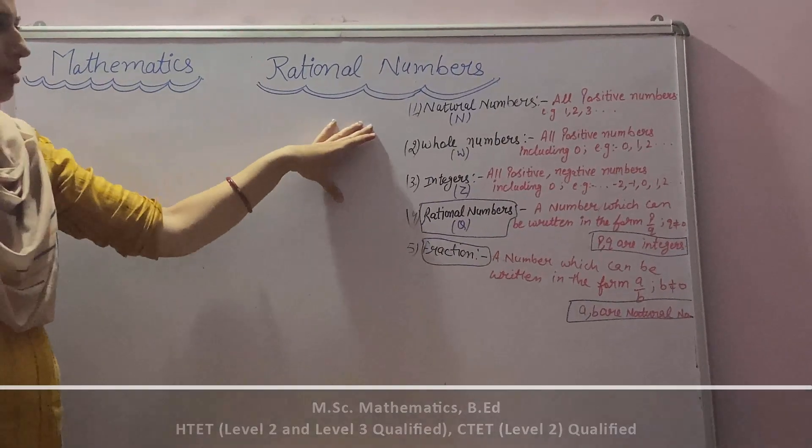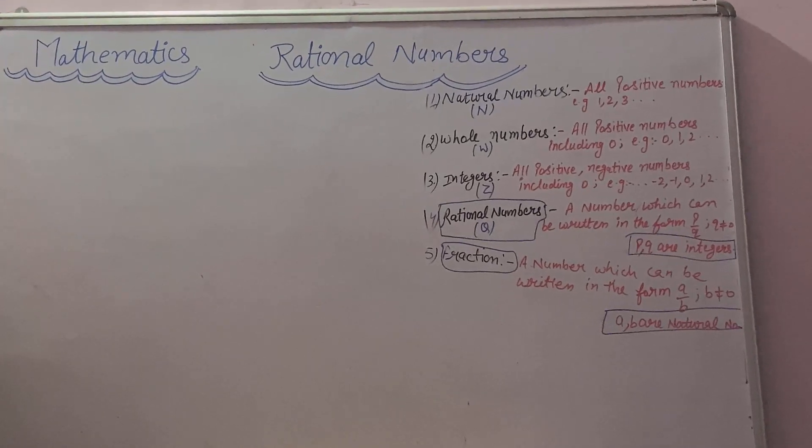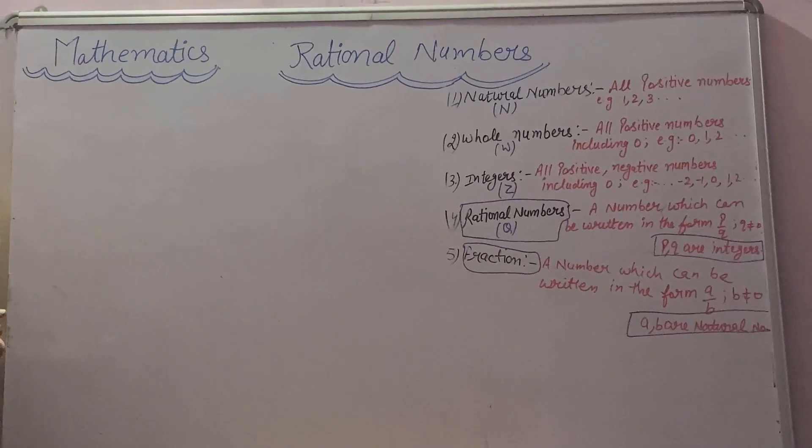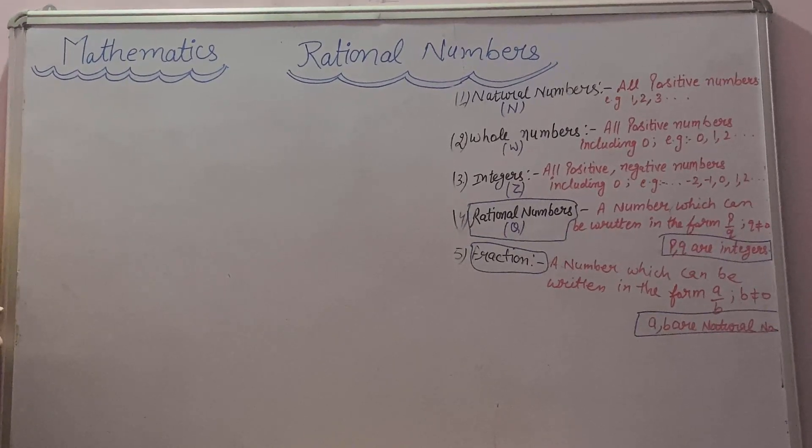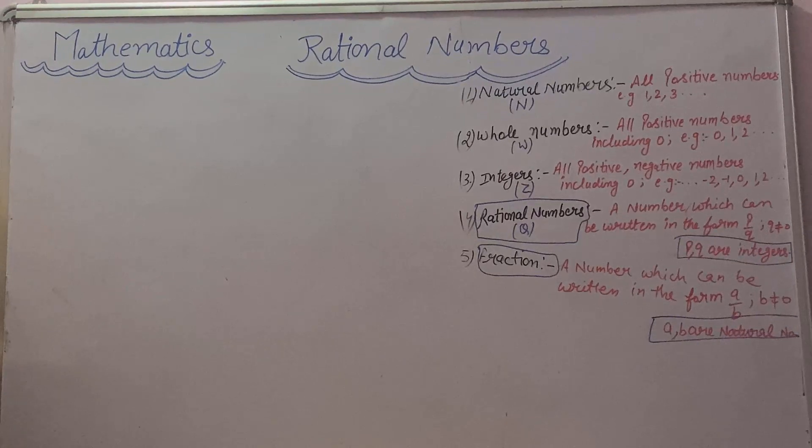First is natural numbers. All the positive numbers are called natural numbers. For example 1, 2, 3 up to infinite. We denote natural numbers by capital N.